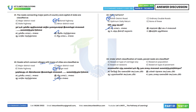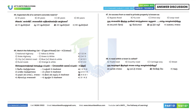44th question: Under which classification of roads are paved roads classified? Paved roads are classified based on type of carriageway. Option D — this is the correct answer. 45th question: The expected life of cement concrete road is 40 years. Option C.